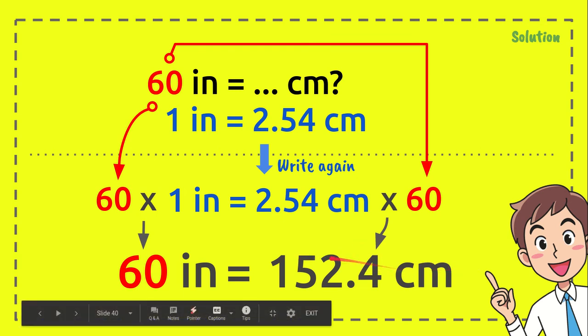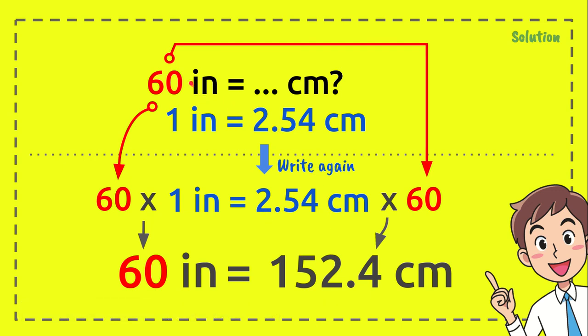But before that, I want to let you know that the reason why we put 60 here and 60 here as well is because the only number we have from the question is 60. And we use a formula. In order to solve this problem, we need to put 60 on the left side of the equal sign and we need to put 60 on the right side of the equal sign.